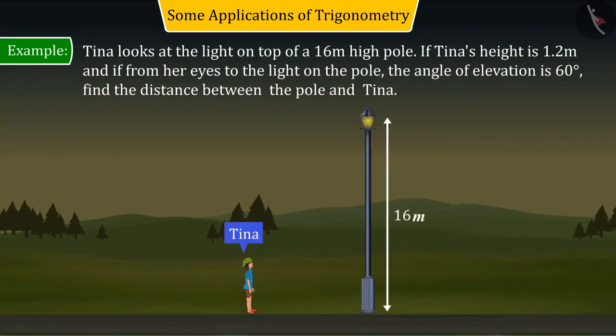Tina looks at the light on top of a 16 meter high pole. If Tina's height is 1.2 meters and if from her eyes to the light on the pole the angle of elevation is 60 degrees, find the distance between the pole and Tina.